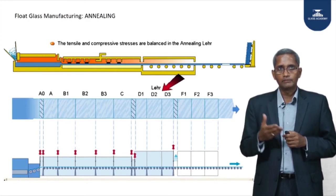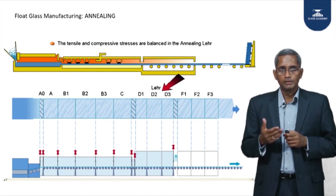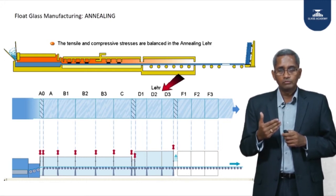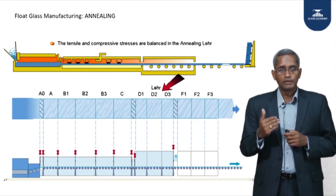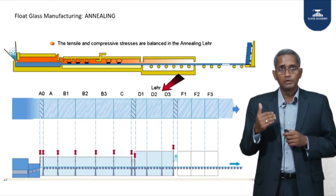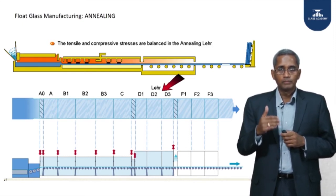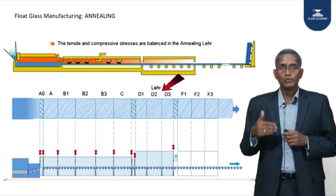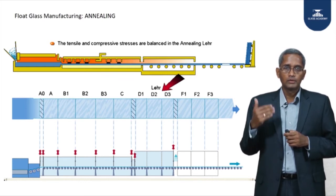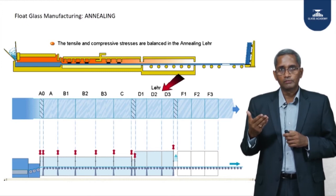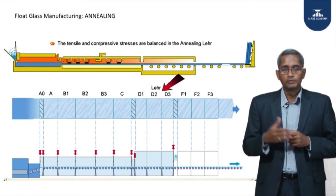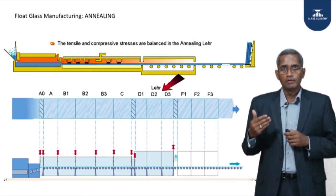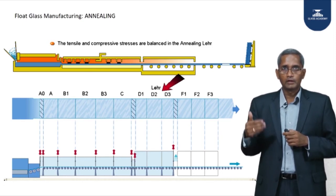The annealing lehr has various segments with different cooling methods. In the A zone, cold air is supplied in a co-current form for fast cooling. The B zone is divided into B1, B2, and B3 — a very long range for reasons explained shortly. After that is the C zone with cold air for a slightly faster cooling rate. The D zone uses preheated air in direct contact with the glass, unlike A, B, and C which use ducts. The F zone uses mass cold air directly onto the glass for faster cooling.